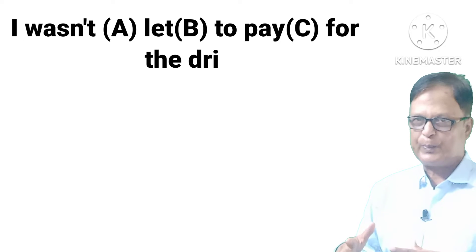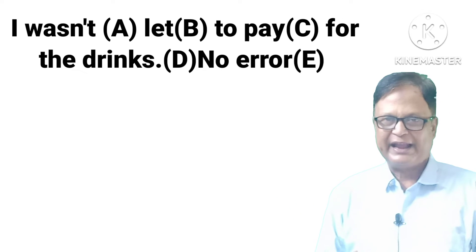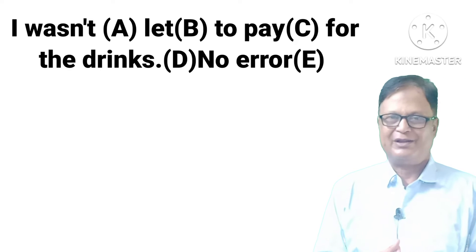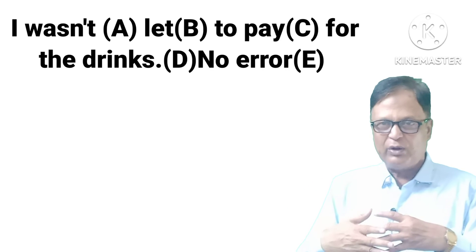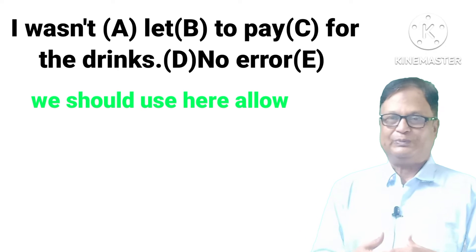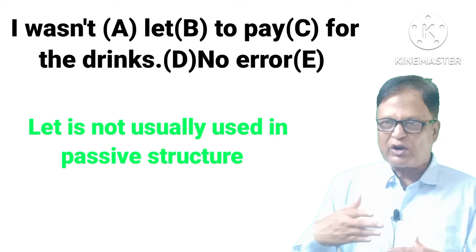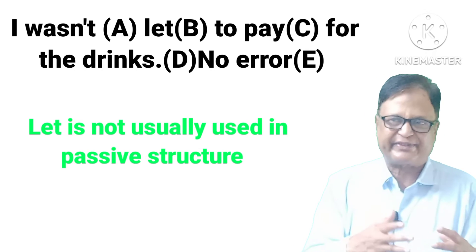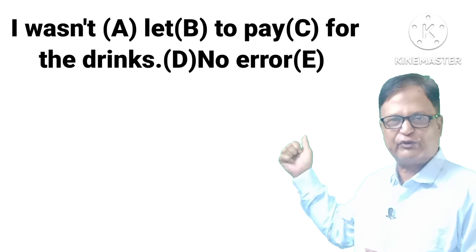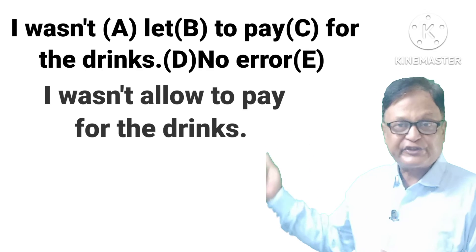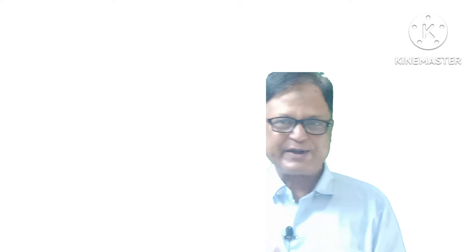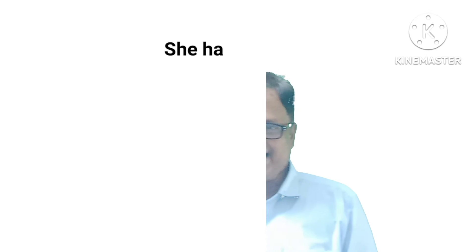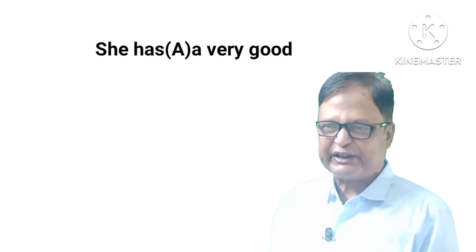Next: 'I wasn't let to pay for a drink.' Here, 'let' means 'allow,' but 'let' is not usually used in the passive structure. We should use 'allow' instead. The corrected sentence is: 'I was not allowed to pay for a drink.'